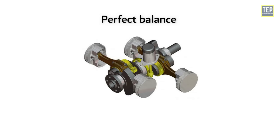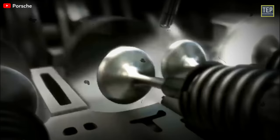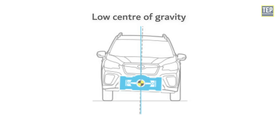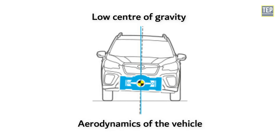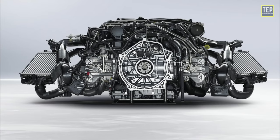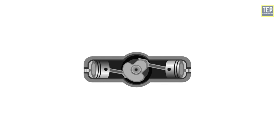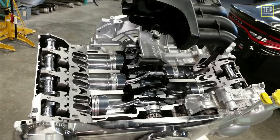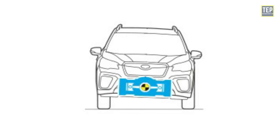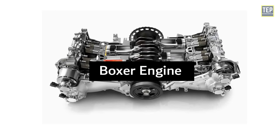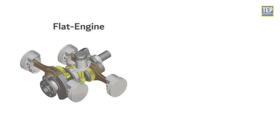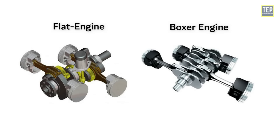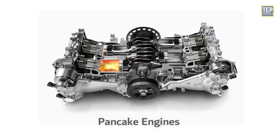Flat engines are famous for having perfect balance and can offer sports cars high performance and power without vibration. Their low center of gravity can improve the aerodynamics of the vehicle. They are also fairly easier to cool thanks to their horizontally opposed profile. The problem is that flat engines are wider than comparable inline or V engines, and repairs and maintenance can be an issue since the heads are basically on the side of the car. Notably, flat engines are not boxers — but boxer engines are flat. Due to their low height they are also known as pancake engines.